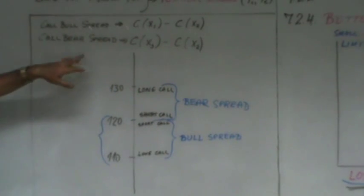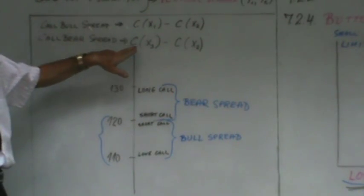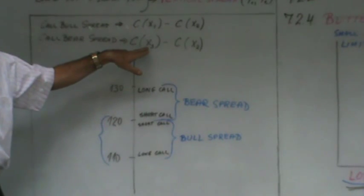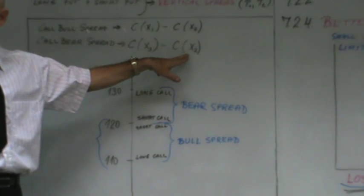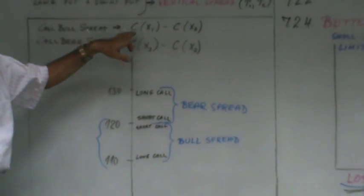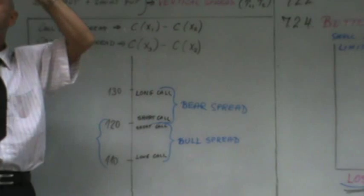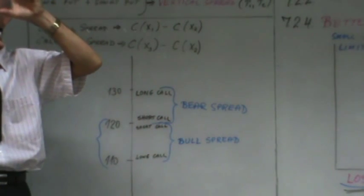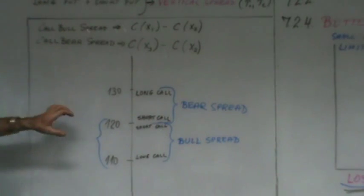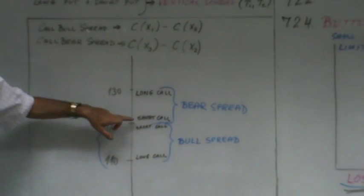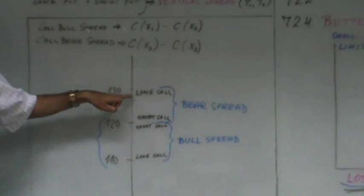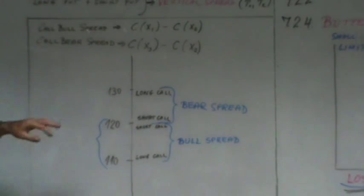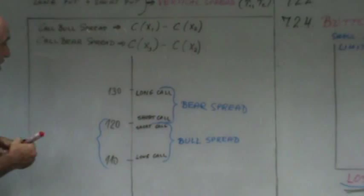You're also going into a call bear spread, so the butterfly is a bull and a bear spread. The bear spread by definition has a long for the higher strike and a short for the lower strike. To make it easy, instead of using four strikes, you use three strikes.